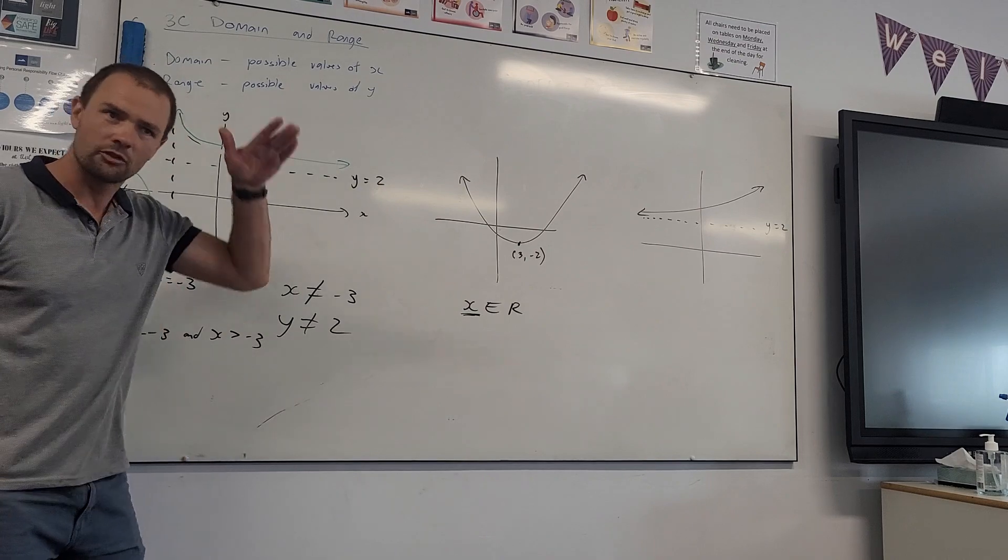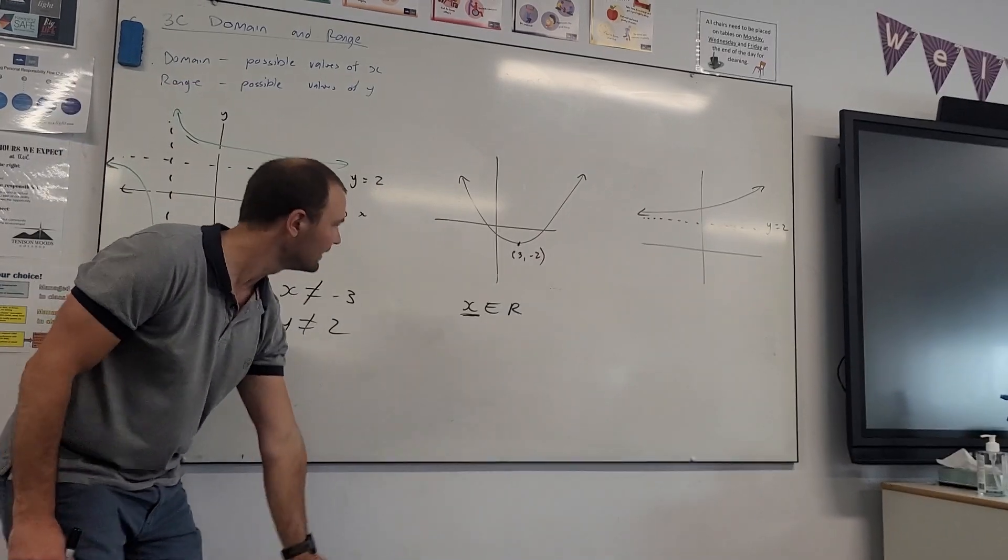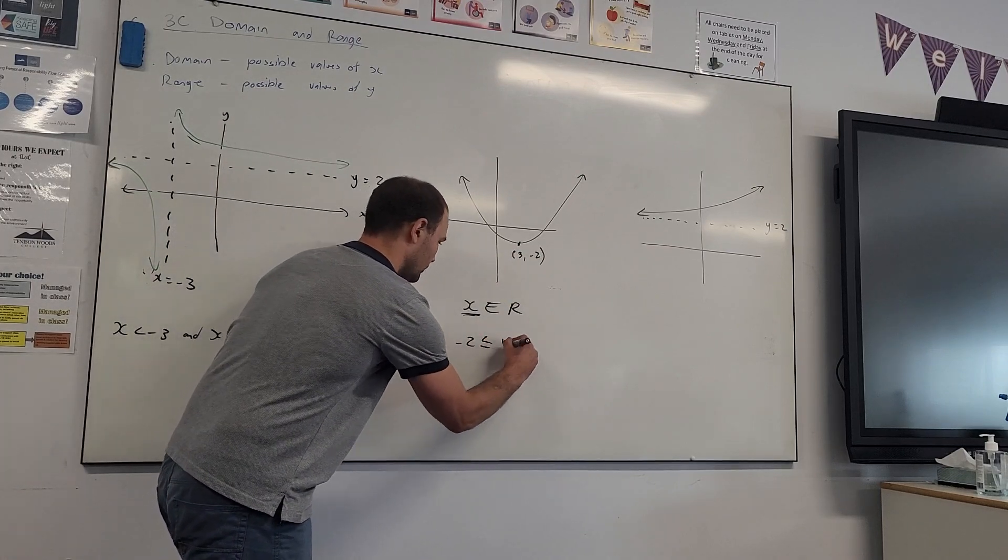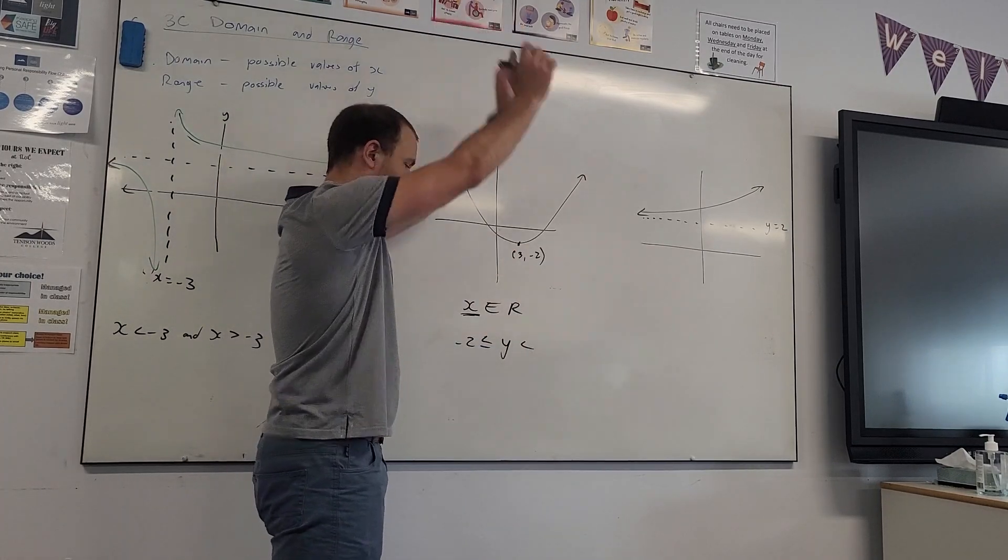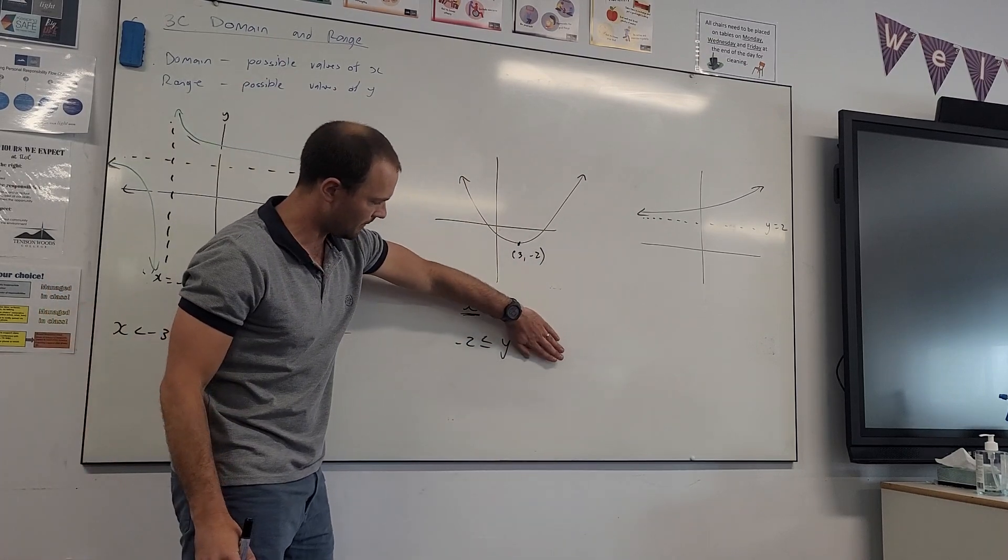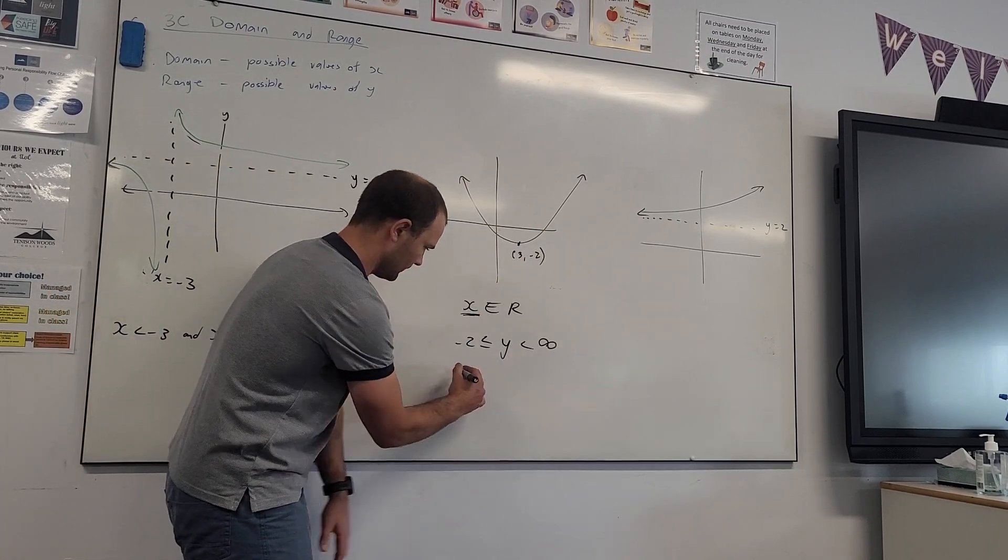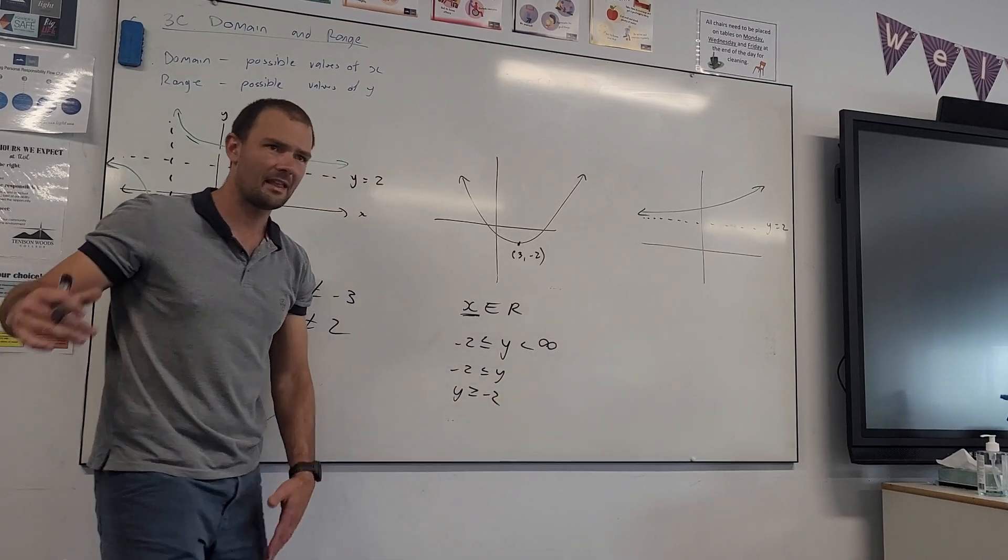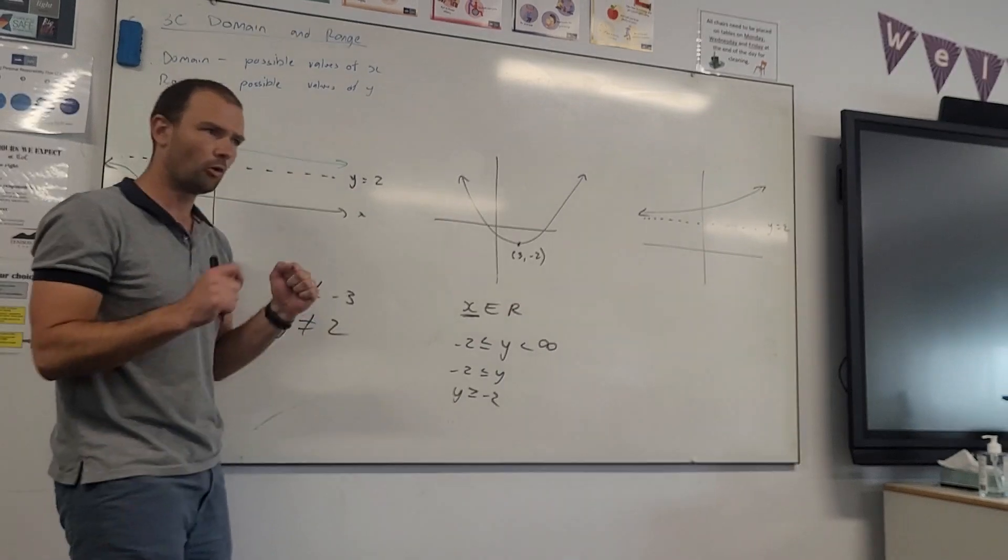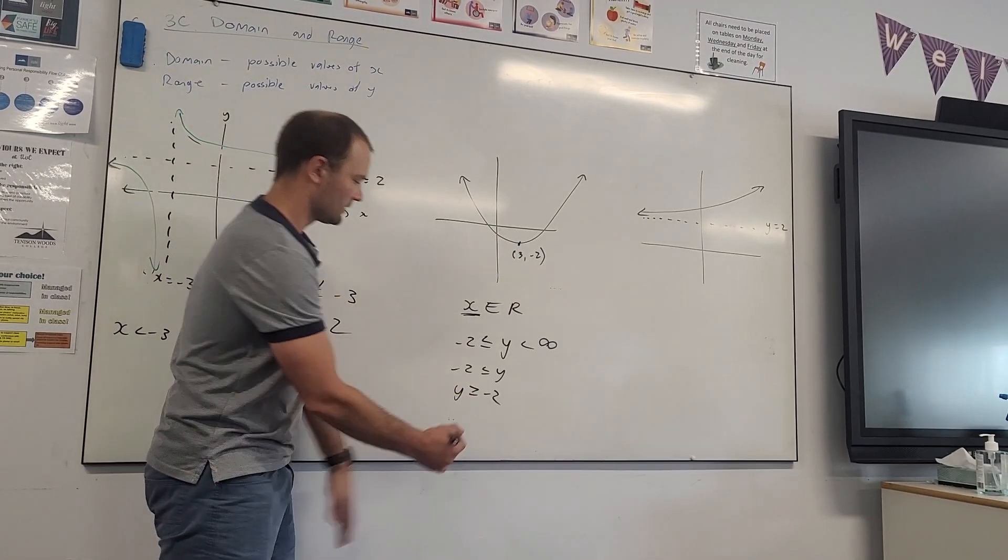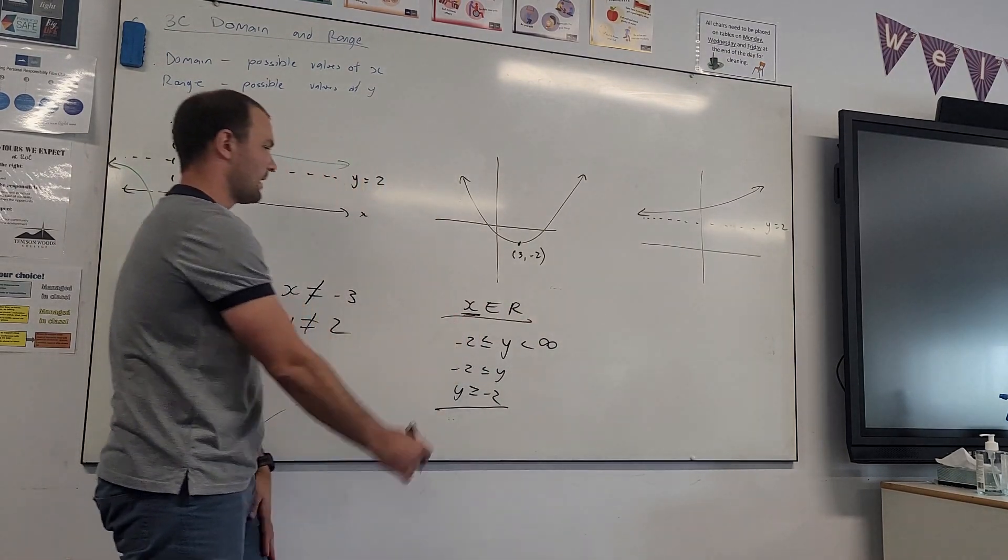And then for the range, the lowest possible value of y is minus 2, included, and the highest possible value of y, infinity, so it's going up forever. I'm saying drop the infinity off, and then flip it. And then check it, is it true that all values of y are larger than or equal to minus 2? Yes. So our range, our domain.